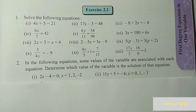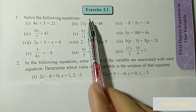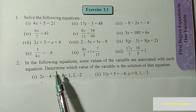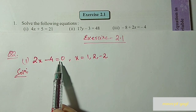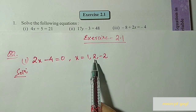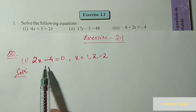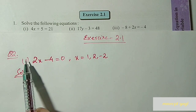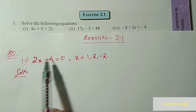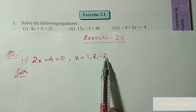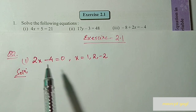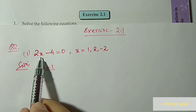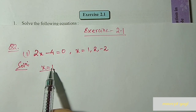In this video we will solve exercise 2.1, question number 2. We are given one equation and three values of x. We have to find out which among these three values is the solution of this equation. We'll put all three values one by one — first we'll put x equal to 1.